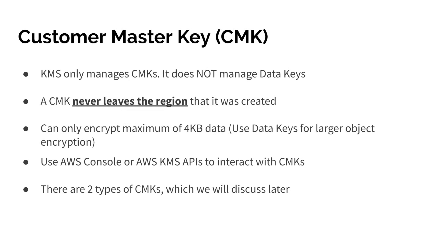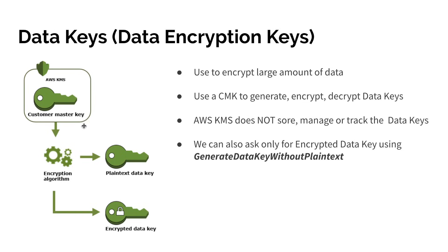Data keys have a relationship with CMKs, and you can generate many data keys from one CMK. Looking at the diagram: the CMK lives inside KMS, and you can create a CMK using the AWS KMS console, AWS SDKs, or CLI. When you have a large amount of data to encrypt, you ask your CMK to generate a data key by calling the KMS API. KMS then sends back two versions of the data key: an encrypted data key and a plain text version.